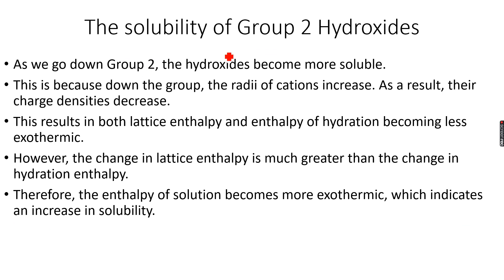Now let's look at the solubility of group 2 hydroxides. As we go down group 2, the hydroxides become more soluble — the opposite trend to sulfates and carbonates, which became less soluble. Let's see why this is the case.